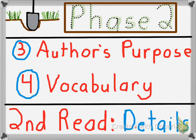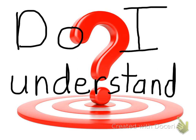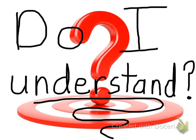We will look for vocabulary words that we may not understand and that will interfere with our understanding of the text. We will use our resources to figure out what these vocabulary words mean. After our second read of the text, we will stop and ask ourselves a question. If the answer is no, we need to go back and read the text again. If the answer is yes, then we can move our close reading to phase three.